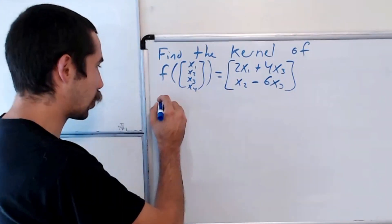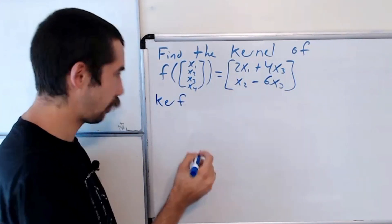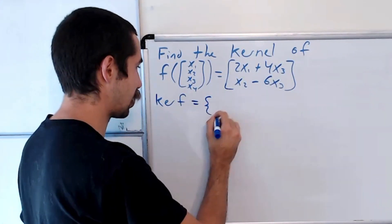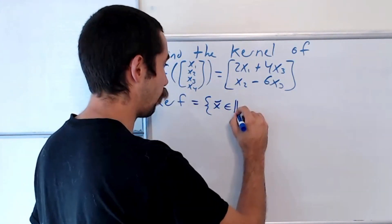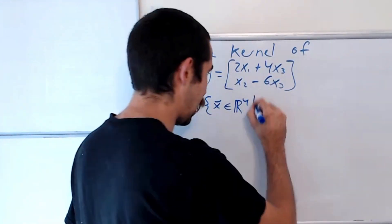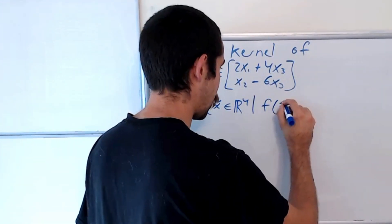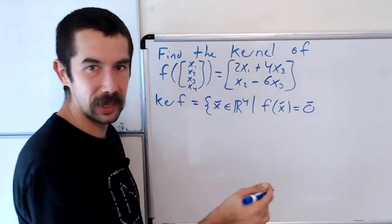Recall the kernel of f, which we write ker f, is equal to the set of x in R4, so x in our domain, such that f of x is equal to the zero vector of the co-domain, which would be the vector (0, 0).